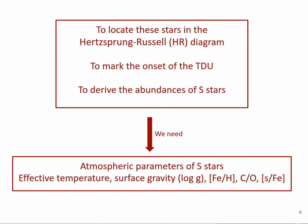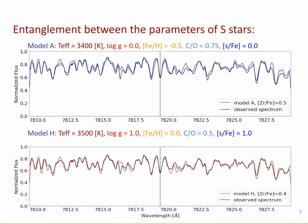To understand these S-stars, the onset physics of the third dredge-up, to derive their abundances, and to locate them in an HR diagram to understand their evolutionary status, we need accurate atmospheric parameters. The problem for such evolved stars is that, apart from effective temperature and surface gravity, parameters like metallicity, carbon-to-oxygen ratio, and the S-process index also play an important role. The parameter space is much extended, and the parameters are also strongly entangled with one another.